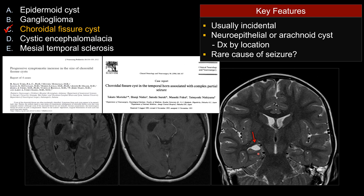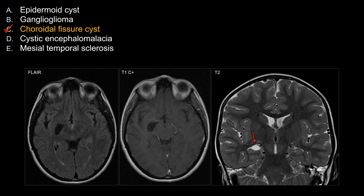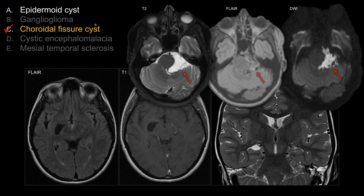If it gets large enough, it may compress on the hippocampus causing symptoms. Uncommonly, there are case reports of large choroidal fissure cysts presenting with seizure. Now let's look at the other answer choices that do not work as well in this case. Choice A is epidermoid cyst. On T2, an epidermoid cyst is bright. However, on FLAIR, there's incomplete fluid suppression.